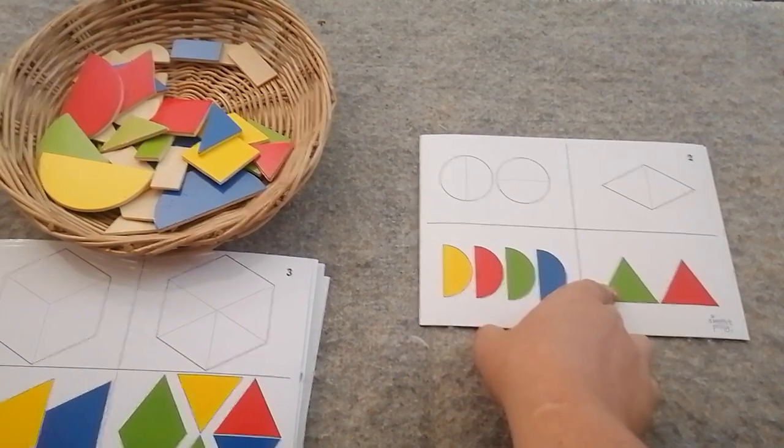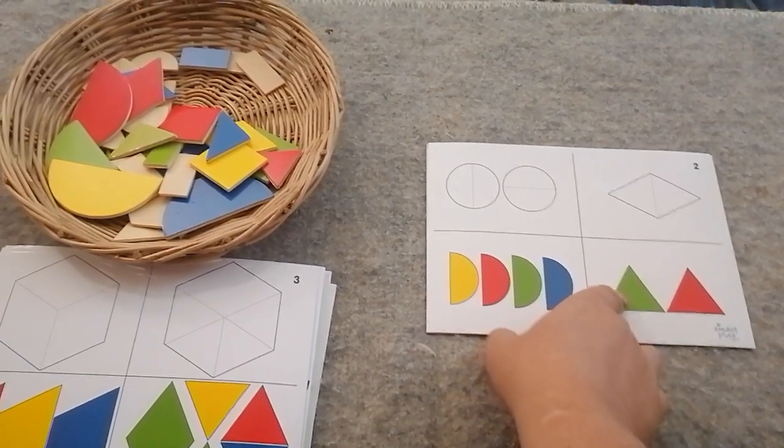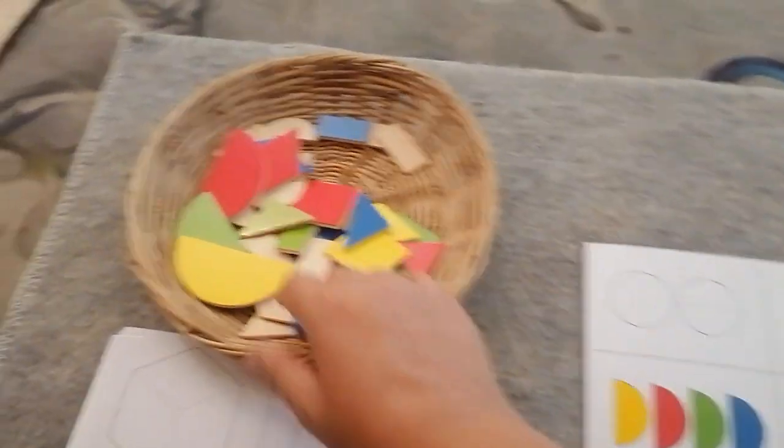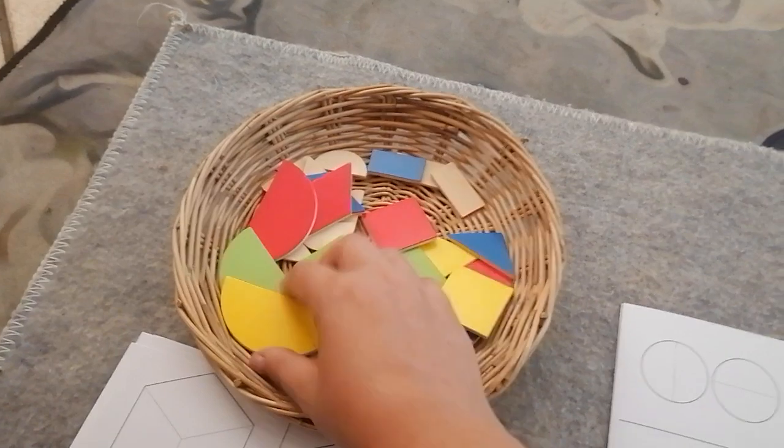And we have two triangles, a green triangle and a red triangle, but we're going to talk about this in a second. Let's find all of the semi-circles.